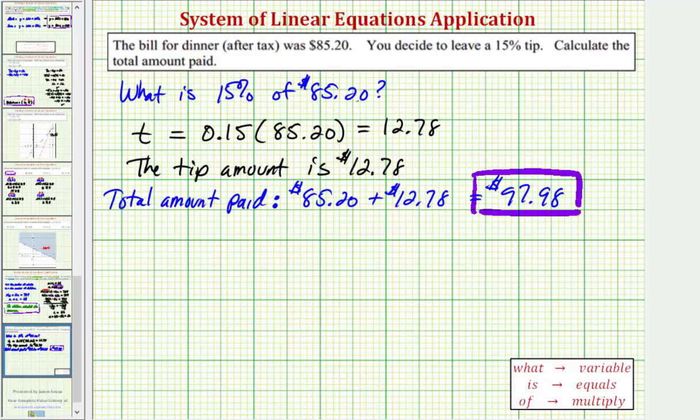But let's also solve this a different way. If we want to determine the total amount paid, we know we're going to pay 100 percent of the bill, and then we're going to add 15 percent for the tip. So if we're going to pay 100 percent plus 15 percent, notice how this sum is 115 percent.